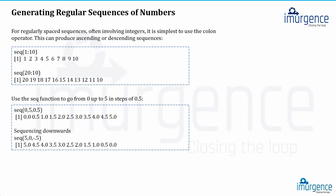Now let's look at sequence generation. We have already seen sequences like 1 to 5 and 5 to 10 using the colon operator. For a regularly spaced sequence, we can use the `seq()` function — for example, `seq(1, 10)` creates a sequence from 1 to 10. However, using `1:10` also does the same job, with a key difference: the colon operator does not let you specify the gap between elements.